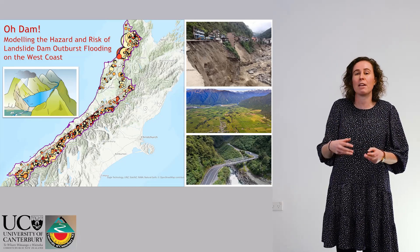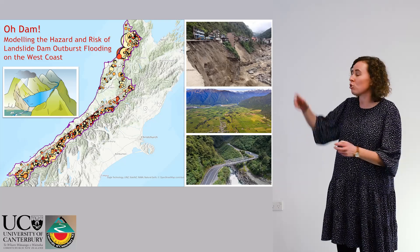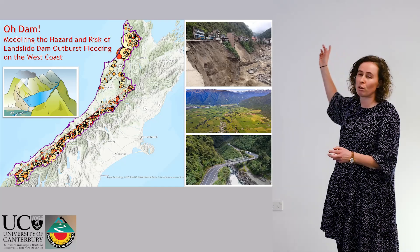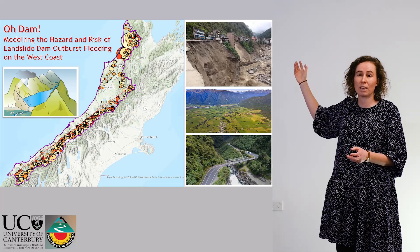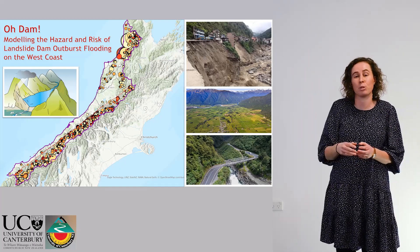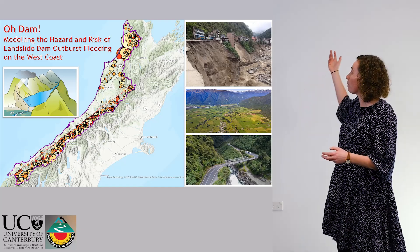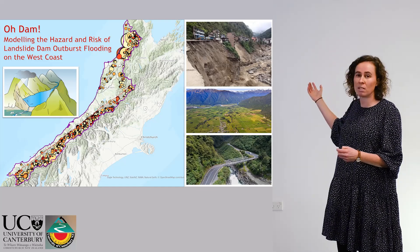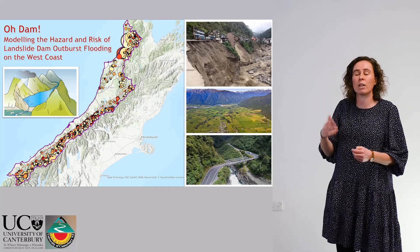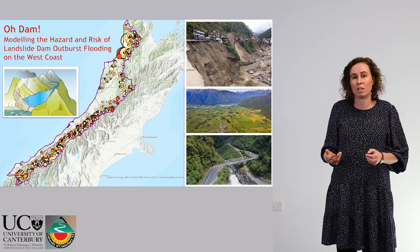These can have really big impacts on communities. This top photo here is of Tibet, where a monsoon caused a landslide and an outburst flood that took out the main road, took out some of the houses, and it took a really long time to clean up after this.